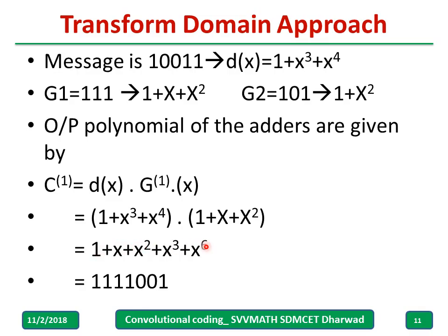Write the result in terms of 0s and 1s by checking each power of x: x to the 0 is present (1), x is present (1), x squared is present (1), x cubed is present (1), x to the 4th is not present (0), x to the 5th is not present (0), x to the 6th is present (1). This gives c of 1.